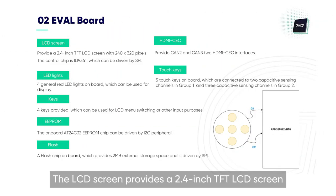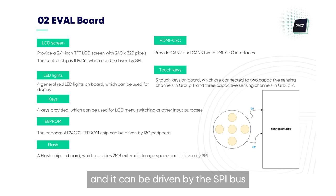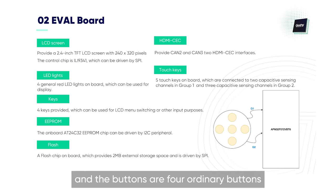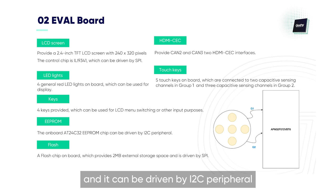The LCD screen provides a 2.4-inch TFT LCD screen with 240 by 320 pixels. The control chip is ILI9341, and it can be driven by the SPI bus. There are four universal red LED lights, and the buttons are four ordinary buttons, which can be used for LCD menu switching or other input purposes. The EEPROM uses a 24C32, and it can be driven by I2C peripheral.